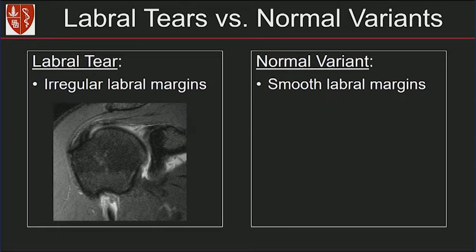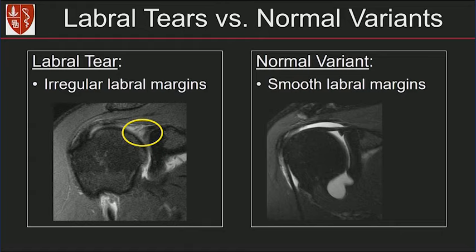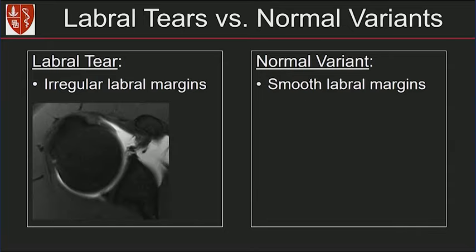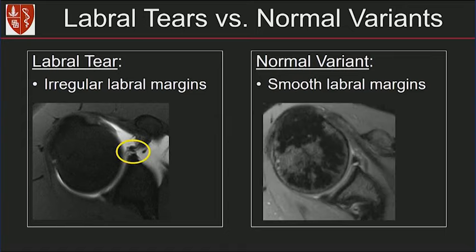Labral tears have irregular labral margins, as shown on these coronal images. In contrast, our sublabral sulcus shows a smooth cleft with smooth labral margins. Axial images also show you the irregular labral margins of a tear. And this is our sublabral foramen — a nice focal separation with smooth labral margins in this normal variant.